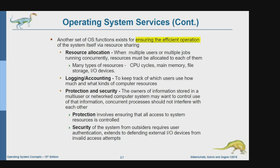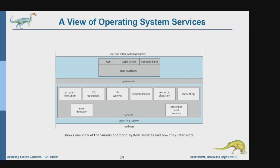We also have protection and security. For example, if one file belongs to user A and another file belongs to user B, then user B is not allowed to open or read a file belonging to user A. Protection involves ensuring that all access to system resources is controlled. Security of the system from outsiders requires user authentication — the login and authentication part. Those are the services provided by the operating system.